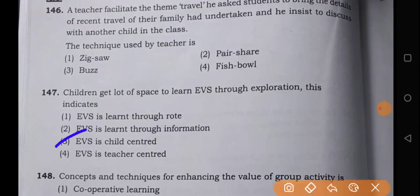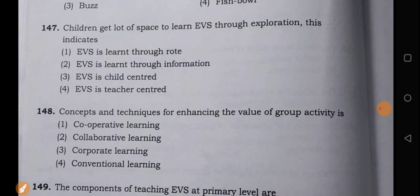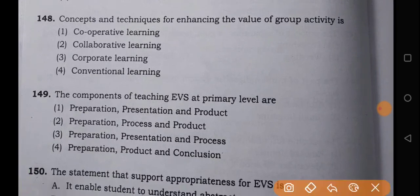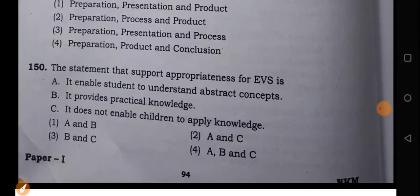Coming to the next one, this is actually child-centered. The last here - collaborative or cooperative with a group activity means collaborative is the right one. And similarly, at primary level, for the best presentation, process is the right one. These are all the answers from my side.